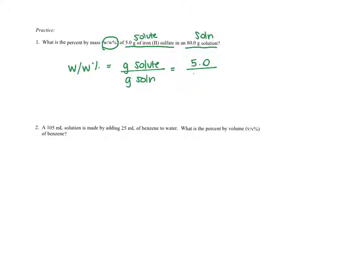For w/w percent, the formula is grams of solute over grams of solution, times 100. I have five grams of solute and 80 grams of solution. So I do five divided by 80 times 100, and I get 6.25%. Since it's a percent, the unit is just the percent sign.